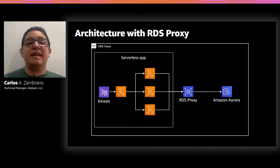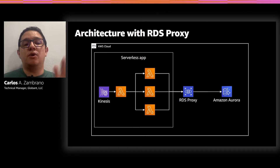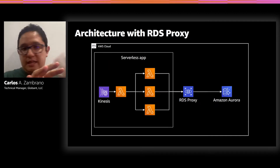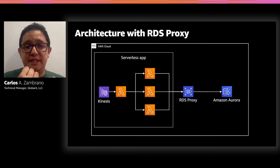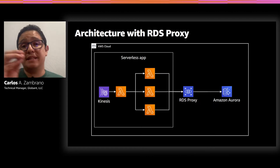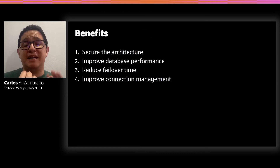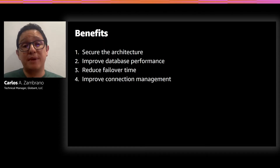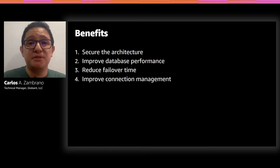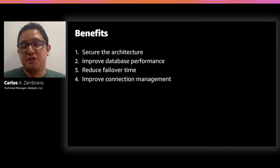In the improved architecture, we include the RDS proxy as a layer between our serverless application and our database. It handles security, connection management, and failover, and all Lambda functions connect directly to the RDS proxy. The benefits are: secure architecture managing all credentials with Secrets Manager, improved connection management increasing database performance, reduced failover time, and overall improved connection management.